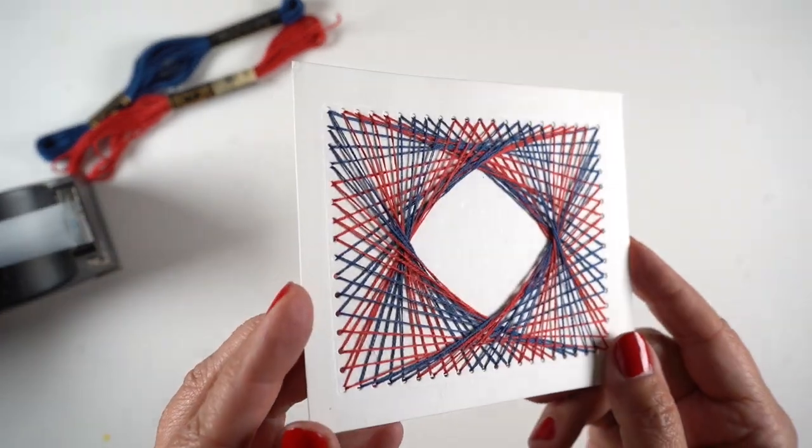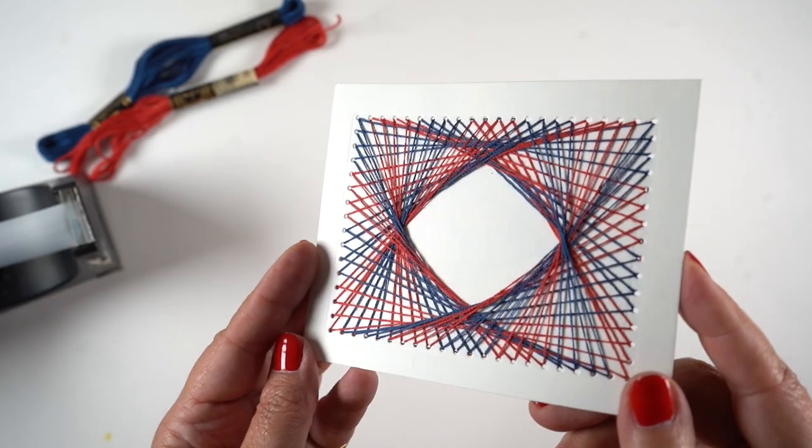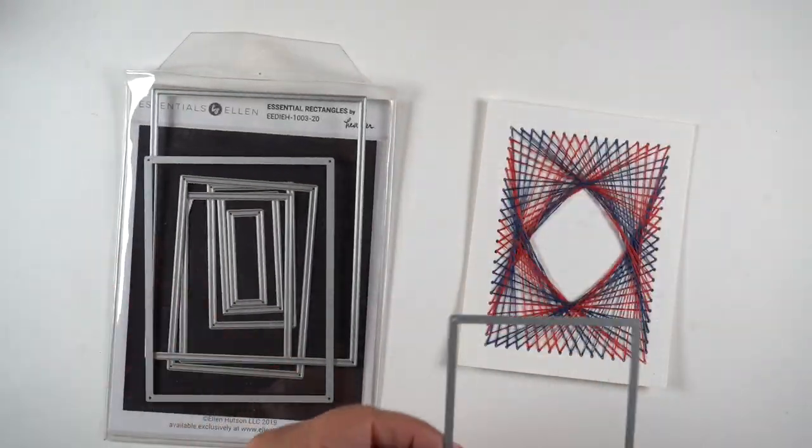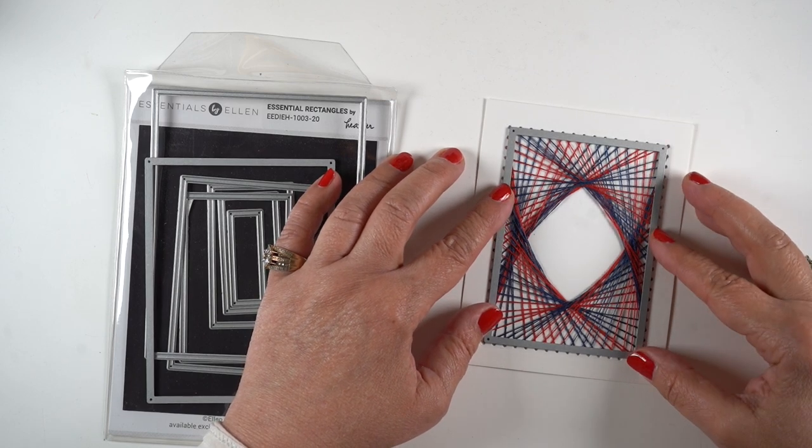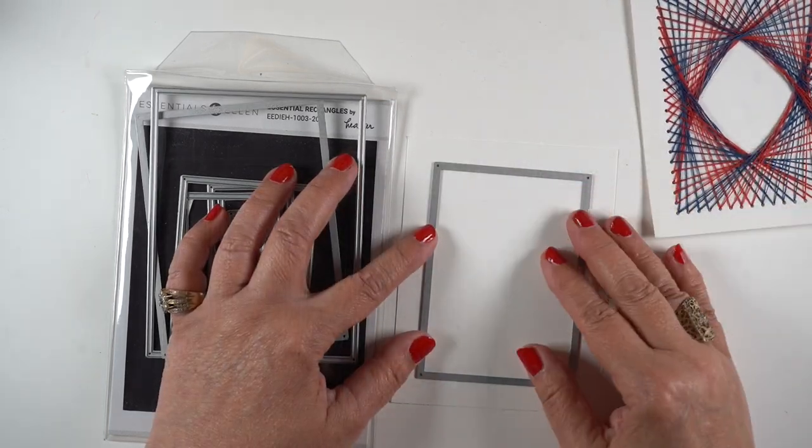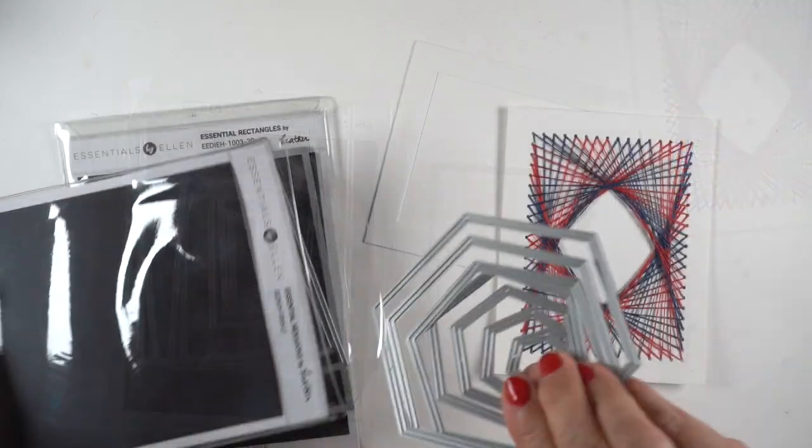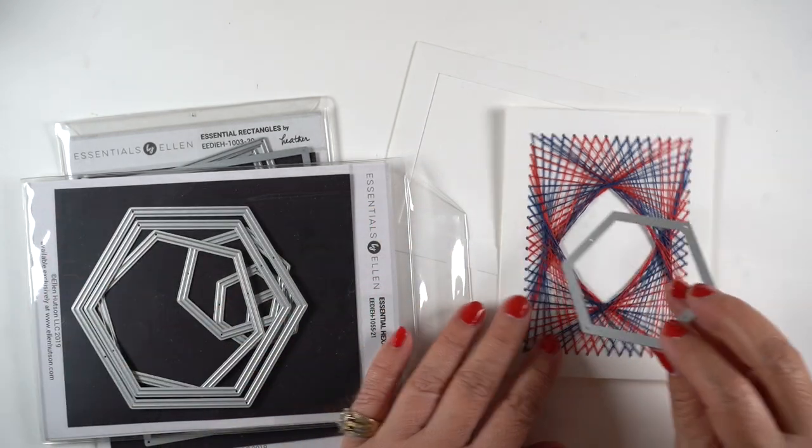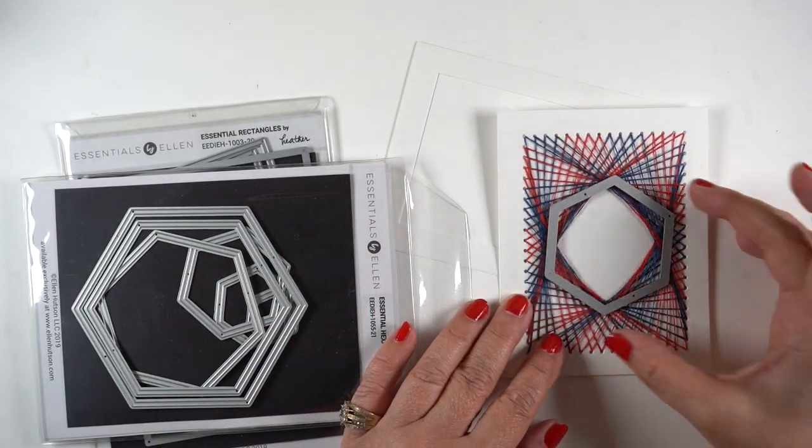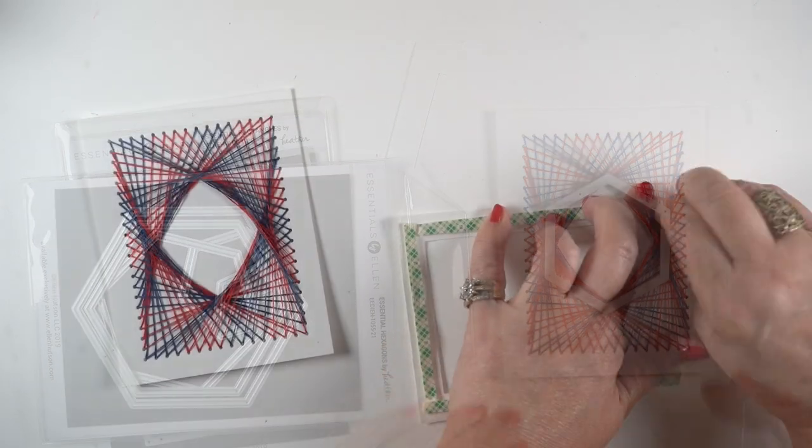Look how cool that is. I mean that would be gorgeous just on a card by itself, throw a sentiment in it. Well, I don't do anything that's just good enough. I have to take it to the next level. So I got out the frame dies and cut a frame out of a piece of cardstock that I'll add on.